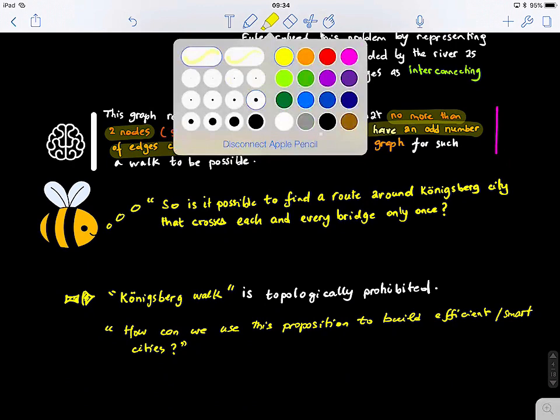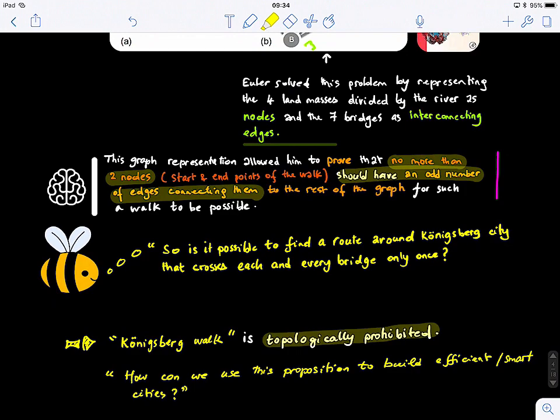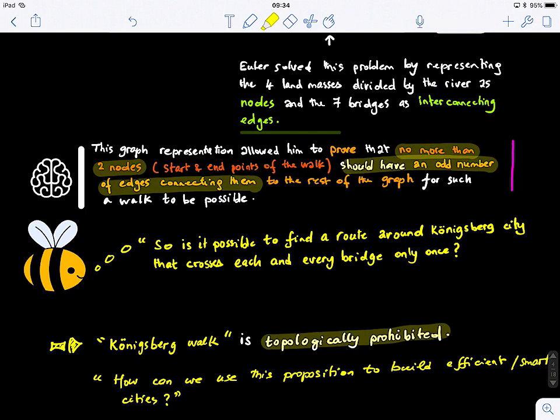This is what we call topologically prohibited. How can we use this proposition to build efficient smart cities? If you were a civil engineer, how can you use this property to build a very effective city where you can easily have an optimal tour, where you can cross all the bridges in the city only once? What is the condition you should have in your design? The condition is no more than two nodes should have an odd number of edges connecting them to the rest of the cities. If you satisfy that criterion in your design, then it is true.